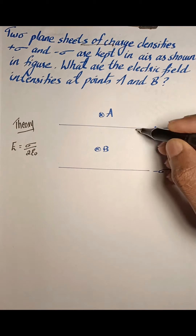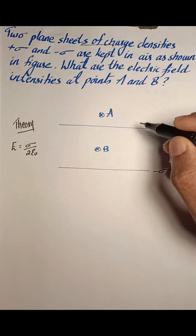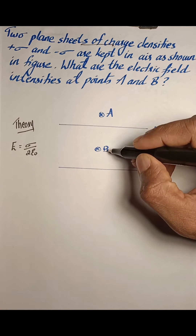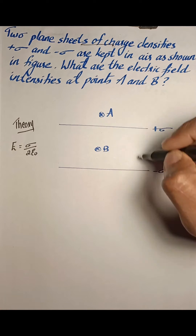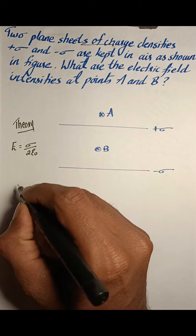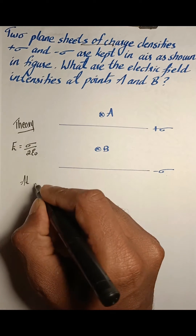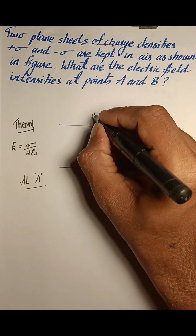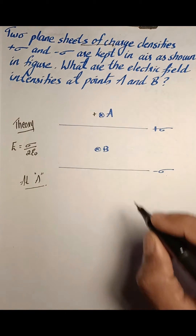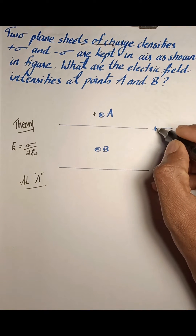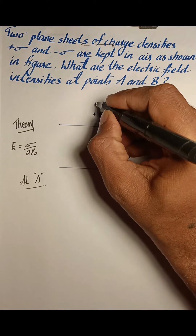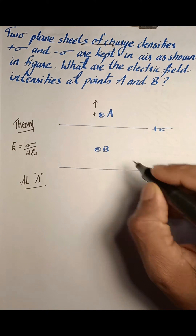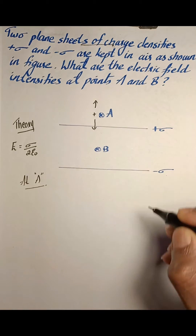We have two different sheets and we need to find the electric field at A due to both sheets, as well as the electric field at B due to both sheets. Let us assume a positive charge is placed at A. The positively charged sheet will repel it in one direction, and the negatively charged sheet will attract it in the opposite direction.